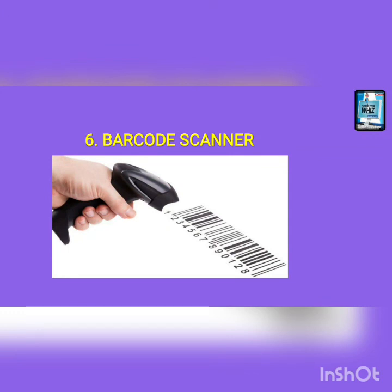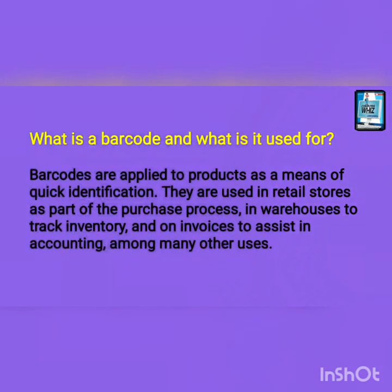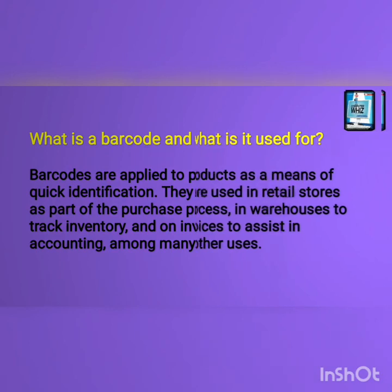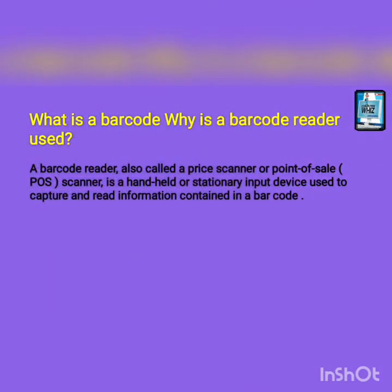The next category is barcode reader. What is a barcode and what is it used for? Barcodes are applied to products as a means of quick identification. They are used in retail stores as part of the purchase process, in warehouses to track inventory, and on invoices to assist in accounting, among many other uses. A barcode reader, also called a price scanner or point of sale (POS) scanner, is a handheld or stationary input device which is used to capture and read information contained in a barcode.